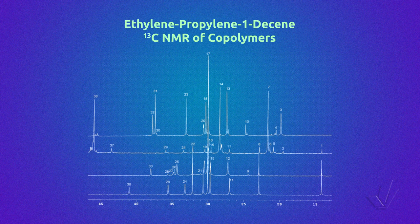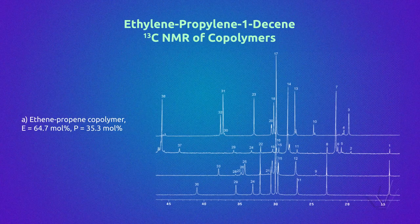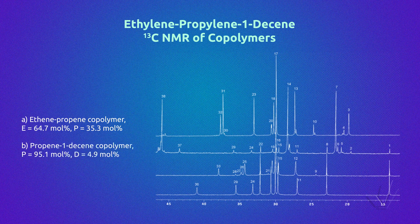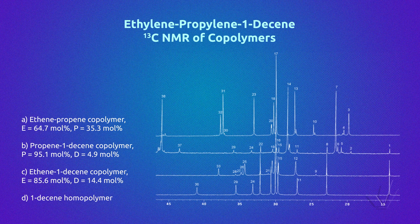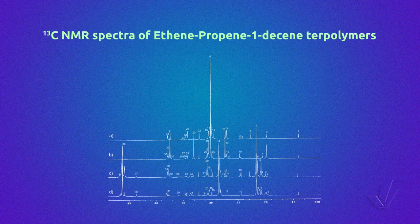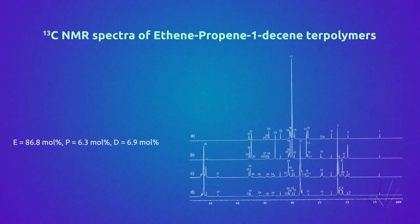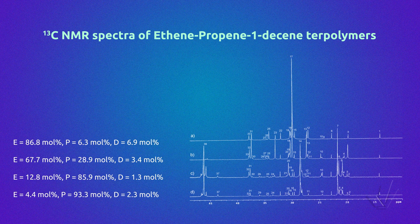Here we have the carbon-13 NMR spectra of some of the copolymers. The first spectrum A is of an ethylene-propylene copolymer. The second one B is a propylene-1-decene copolymer. C is an ethylene-1-decene copolymer and D is a 1-decene homopolymer. These copolymers were obtained to aid in the determination of the terpolymer. Here we have examples of ethylene-propylene-1-decene terpolymers with different amounts of comonomers. The amount of ethylene increases from A to D and the amount of propylene decreases. There are significant differences in these spectra, especially in the regions where there is superposition of peaks; the variable amount of comonomers helped to the assignment of each peak.